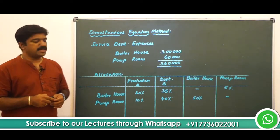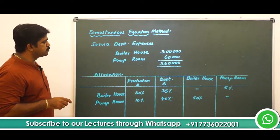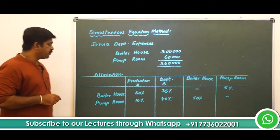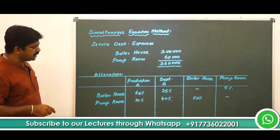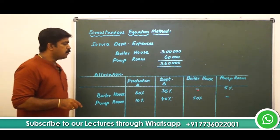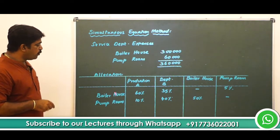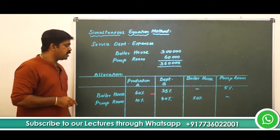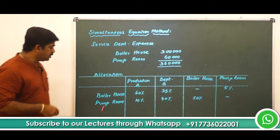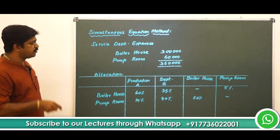This is a case study using the simultaneous equation method. Service department expenses: boiler house 3 lakhs, pump room 60,000 — totally 3,60,000. Boiler house expenses are allocated to production department A 60%, production department B 35%, and pump room 5%. Pump room expenses are allocated to production department A 10%, B 40%, and boiler house 50%.